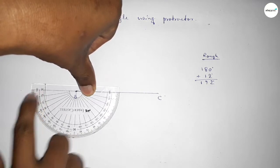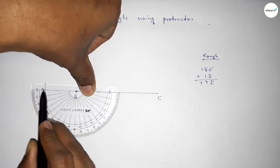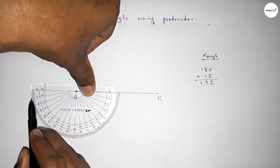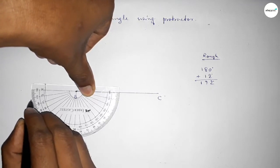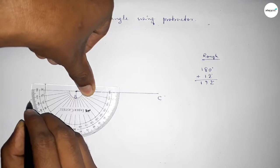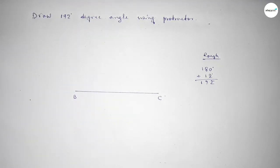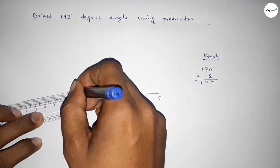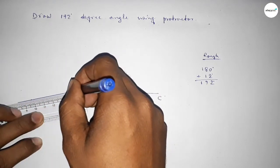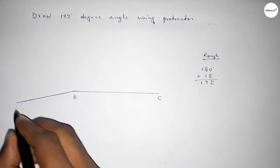So this is 180 degree. Now this is 0, 10, 11, 12. So this is 12. So by adding extra 12 degree angle with 180 degree, then we can get 192 degree angle. So joining this line and taking here point A.